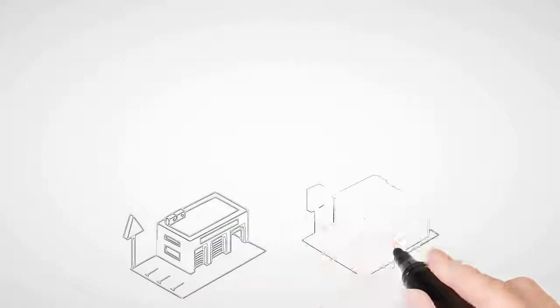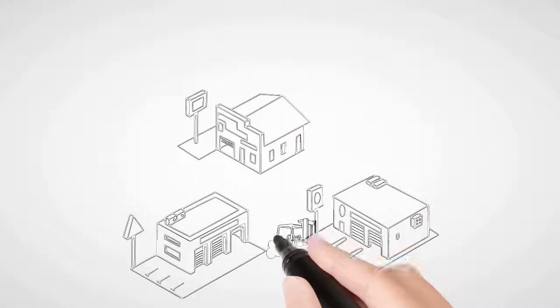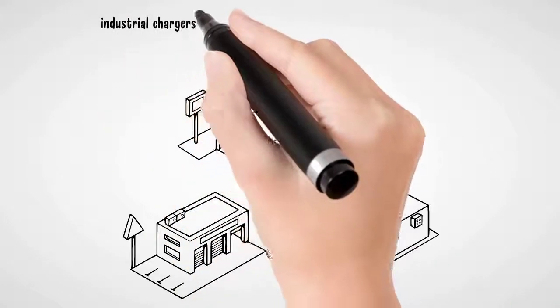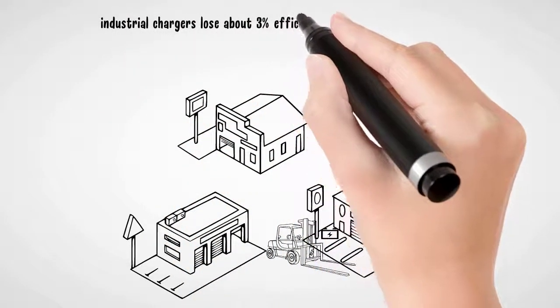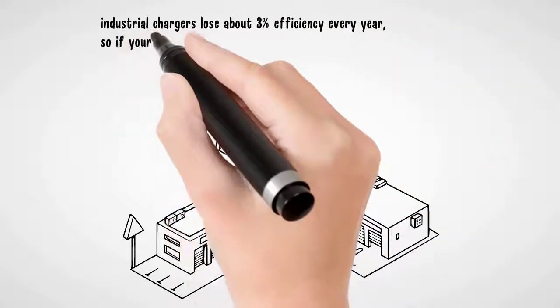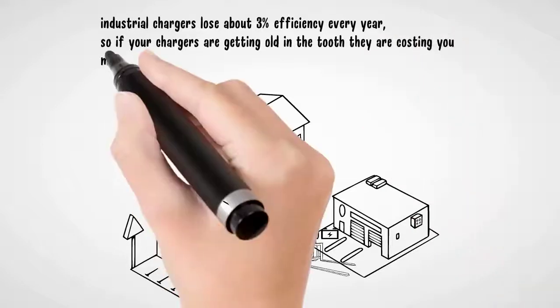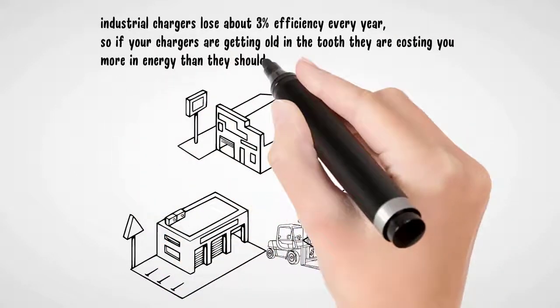Number 7: Make sure your charger is the correct voltage, amp hour range, and current output. Also, keep in mind that industrial chargers lose about 3% efficiency every year, so if your chargers are getting old in the tooth, they're costing you more in energy than they should. It might be time to replace.